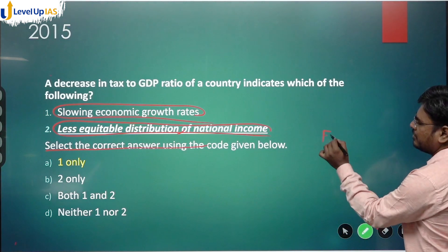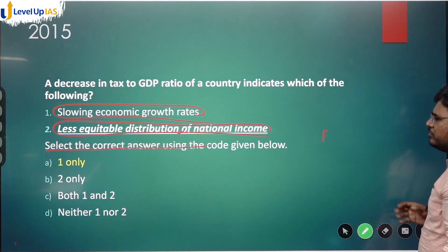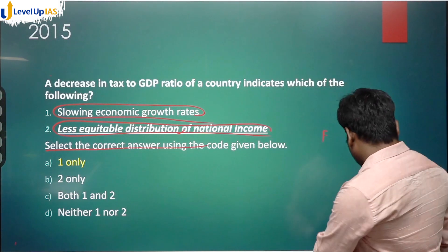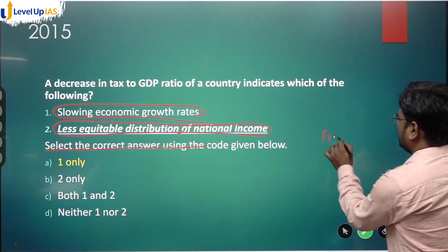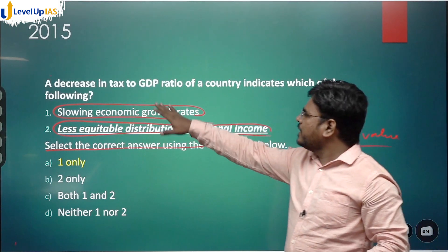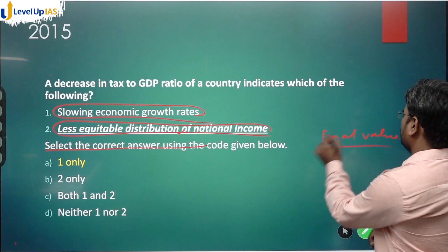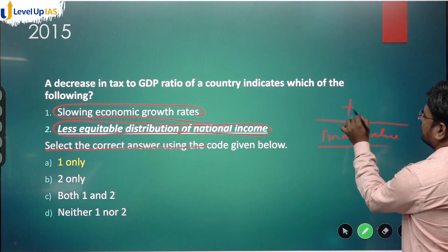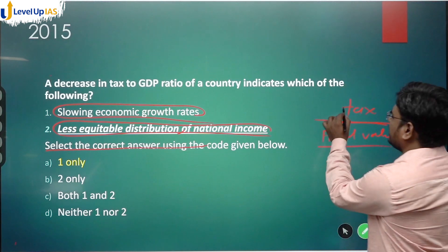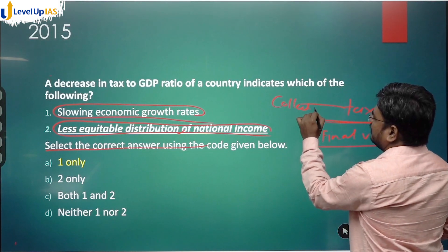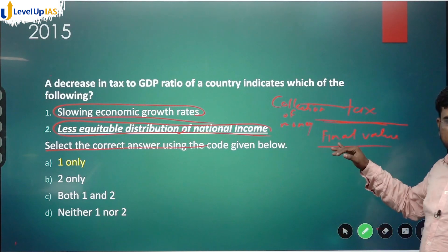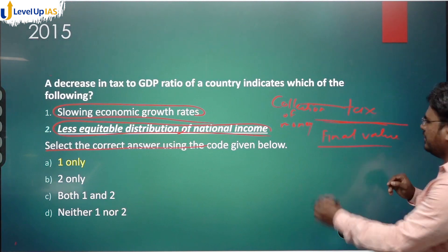You should know what GDP is — it is the final value of goods and services produced in a particular geographical territory, such as India. Tax means just a collection of money, and GDP is also expressed in terms of money.